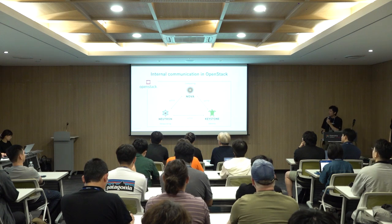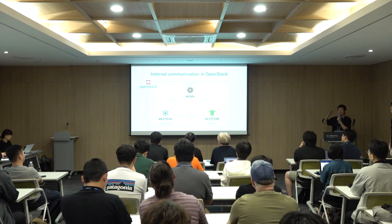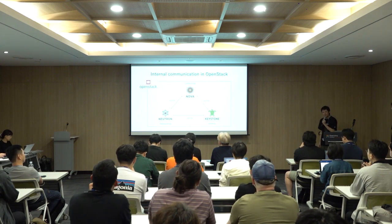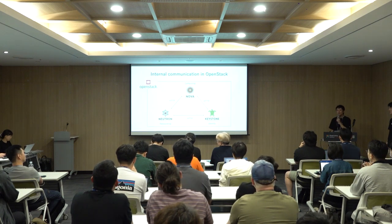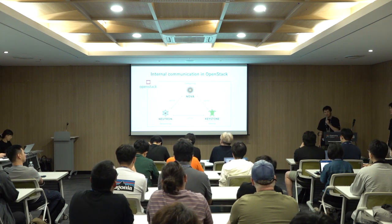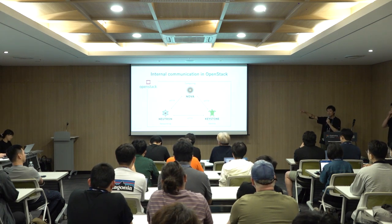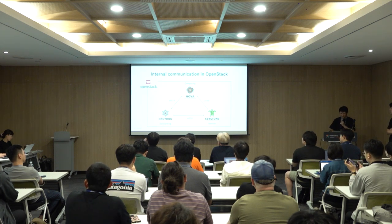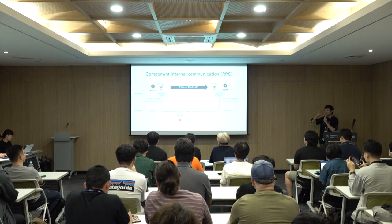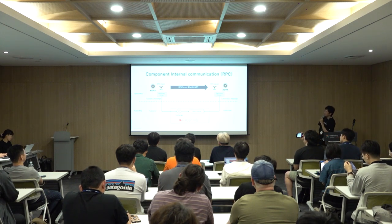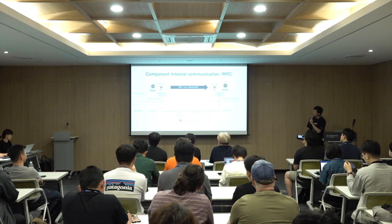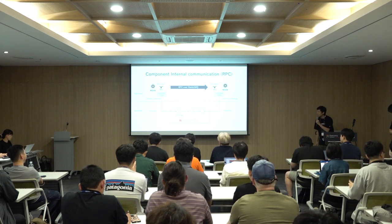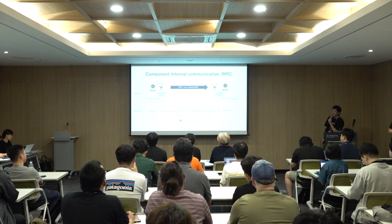Here is the internal communication in OpenStack from the component and services layer. Between services, as you know, OpenStack services are well isolated and distributed. HTTP is used for communication like API requests. On the other hand, let's dive into Nova. Inside Nova, component internal communication uses RPC, which stands for remote procedure call, over RabbitMQ.